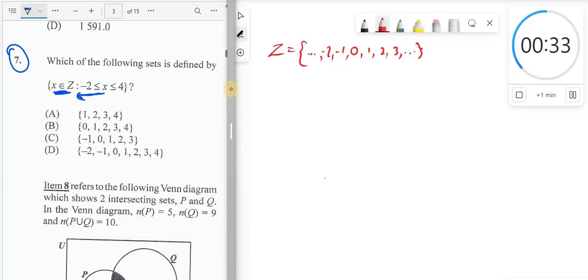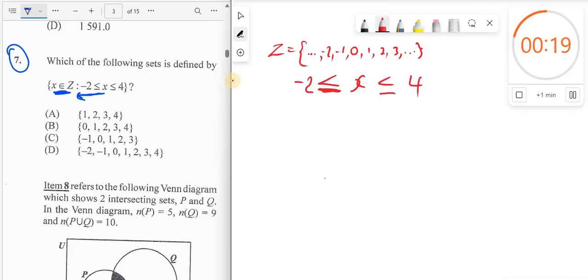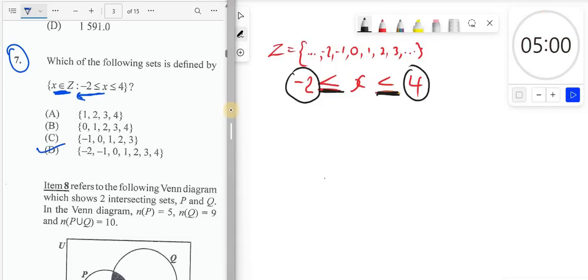But there's one thing I want to tell you quickly. A quick way of working out this question is this. Look. This dash underneath implies we're going to include a number negative 2. And going to the right, this 4, notice that we have the dash underneath. Notice that we have a dash underneath. It means we're going to include what? We're going to include 4. So because we have a dash underneath both inequality symbols, we're going to include the end numbers, negative 2, and 4. And the only option that has that is D.